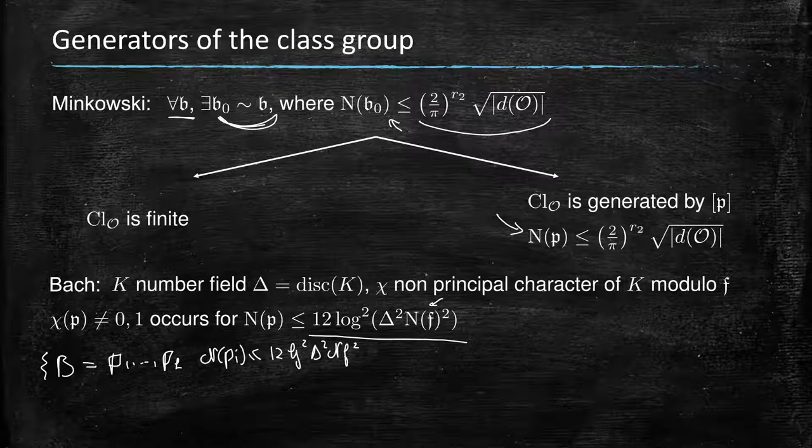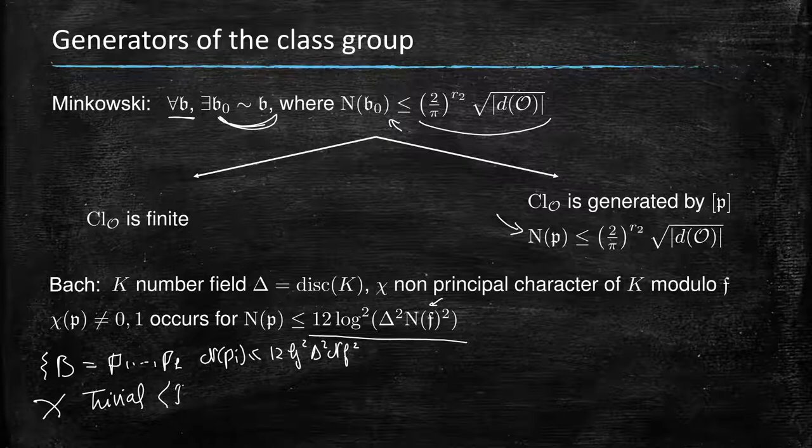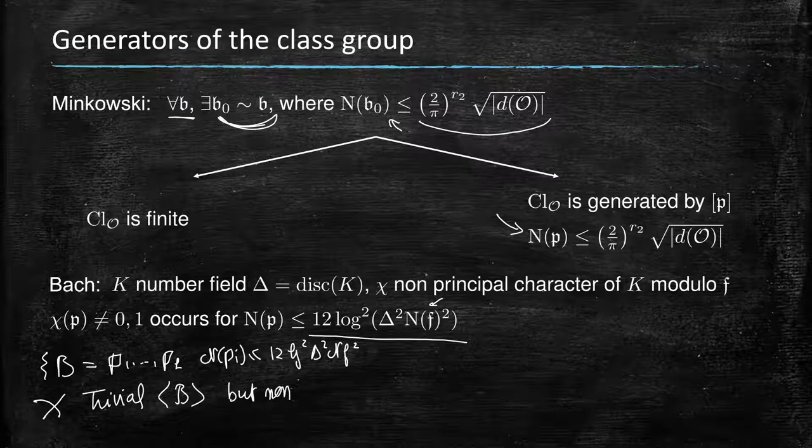So what it means is you can define a character on the ideals that is trivial on B, and therefore on everything that is generated by B, but non-trivial on all the ideals.